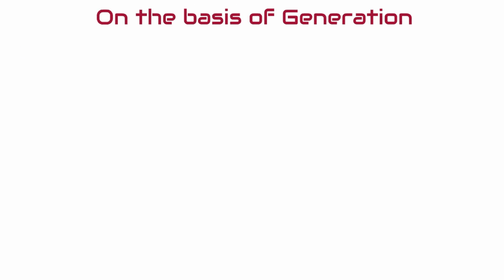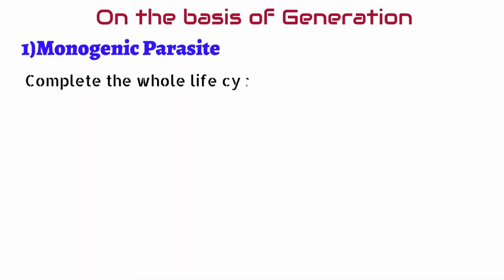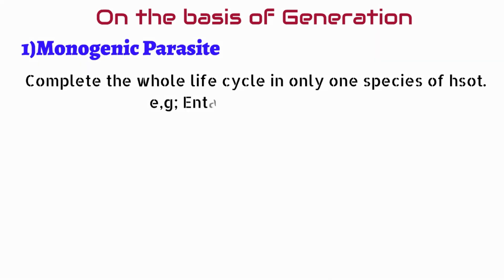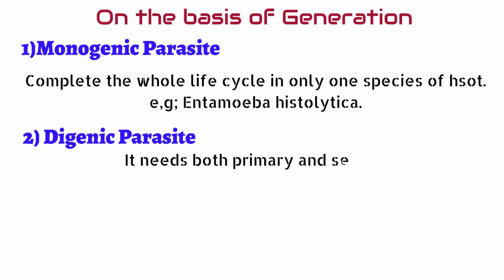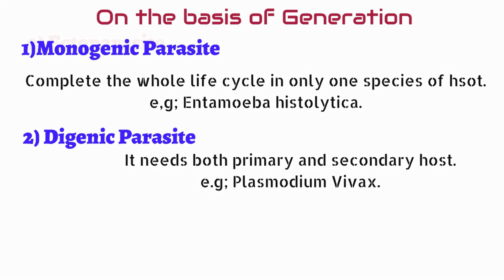On the basis of generation, there are monogenic and diagenic parasites. Monogenic parasites complete the whole life cycle in only one species of host, for example Entamoeba histolytica. Diagenic parasites need both a definitive and an intermediate host to complete the entire life cycle, for example Plasmodium.